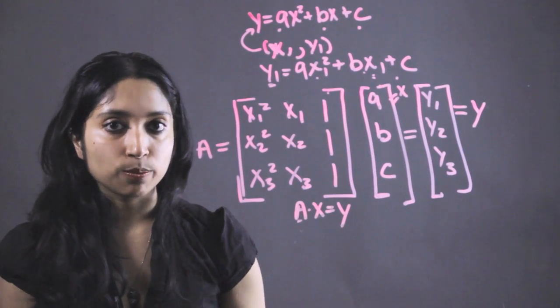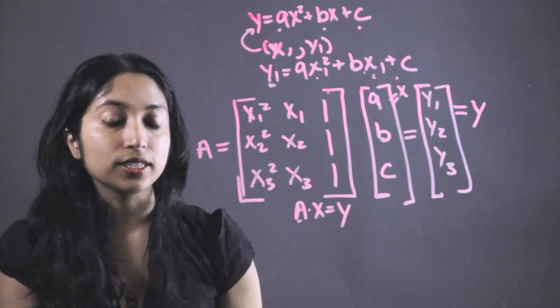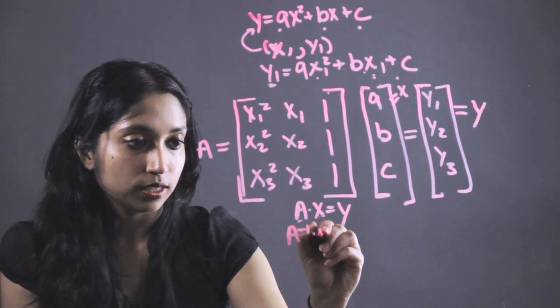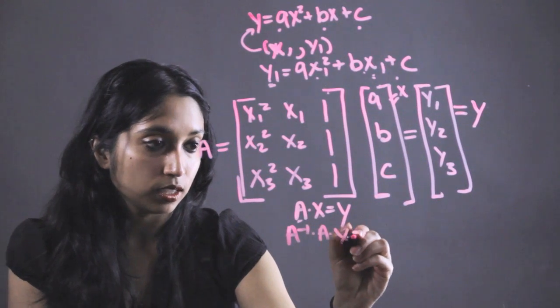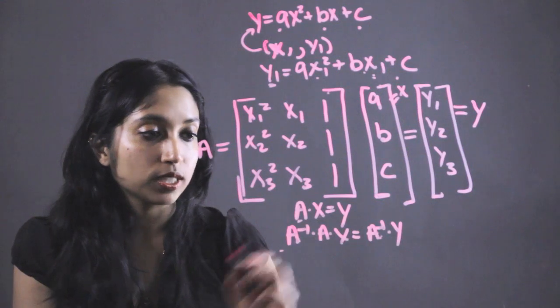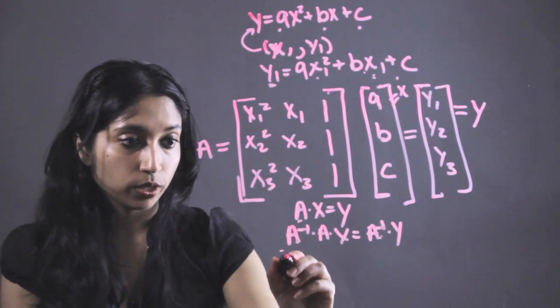Now to do that, to get rid of the A, we can just multiply it by its inverse. Because anything times its inverse is going to be equal to 1. Do A inverse times A times X equals A inverse times Y. And we did the same thing to both sides of this equation, so it's the exact same equation.